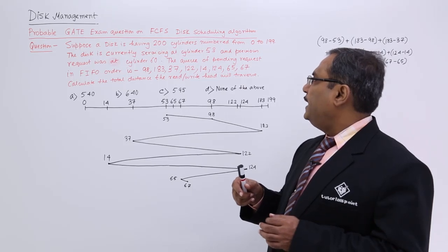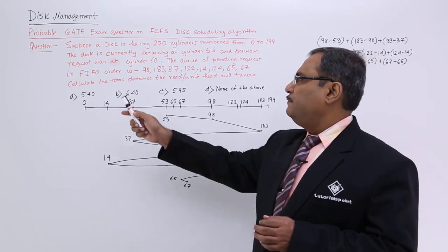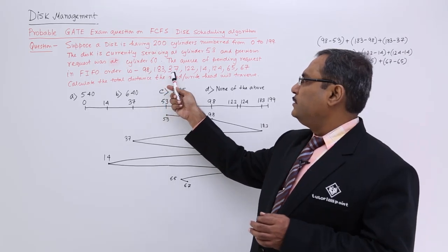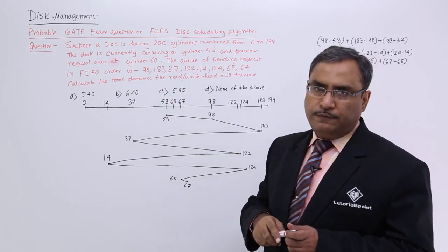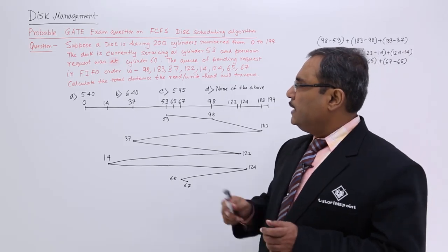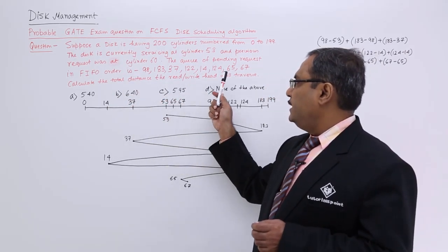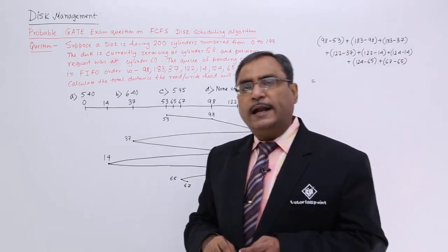The queue of pending requests in FIFO order is 98, 183, 37, 122, 14, 124, 65, and 67. Calculate the total distance the read-write head will traverse. So that is the problem.